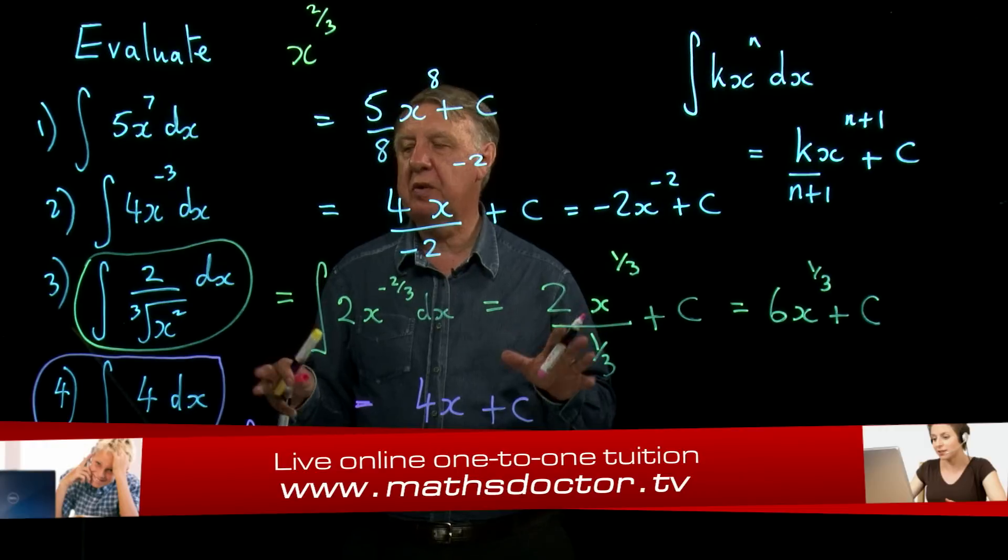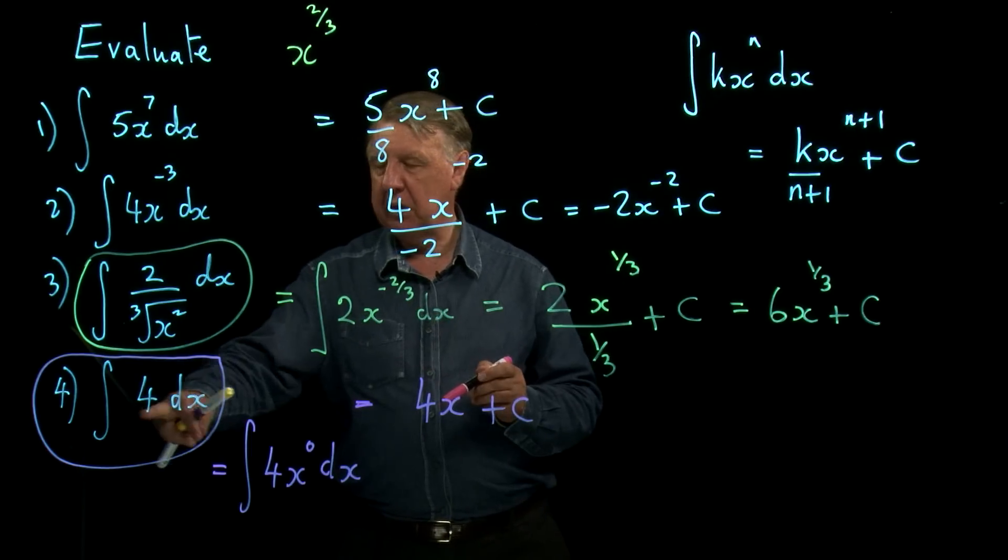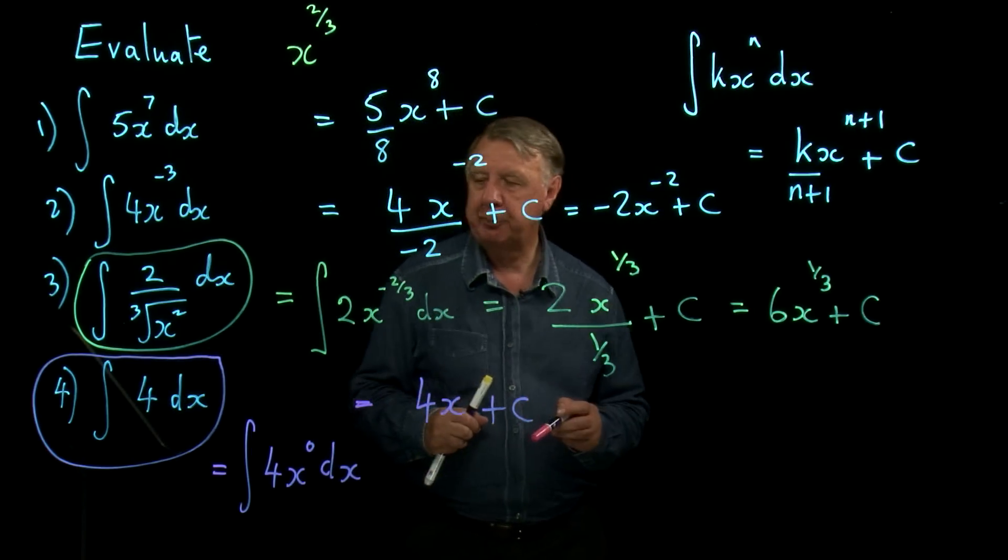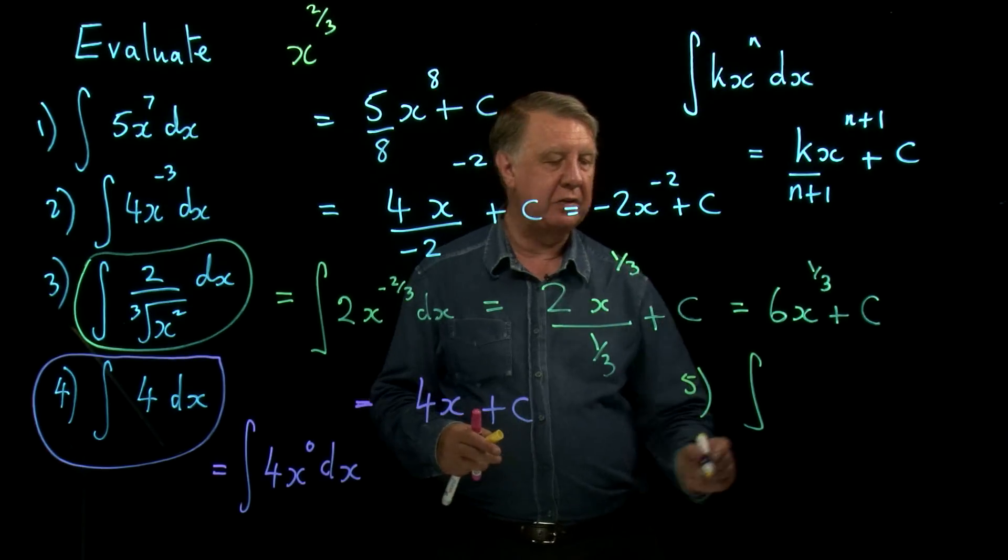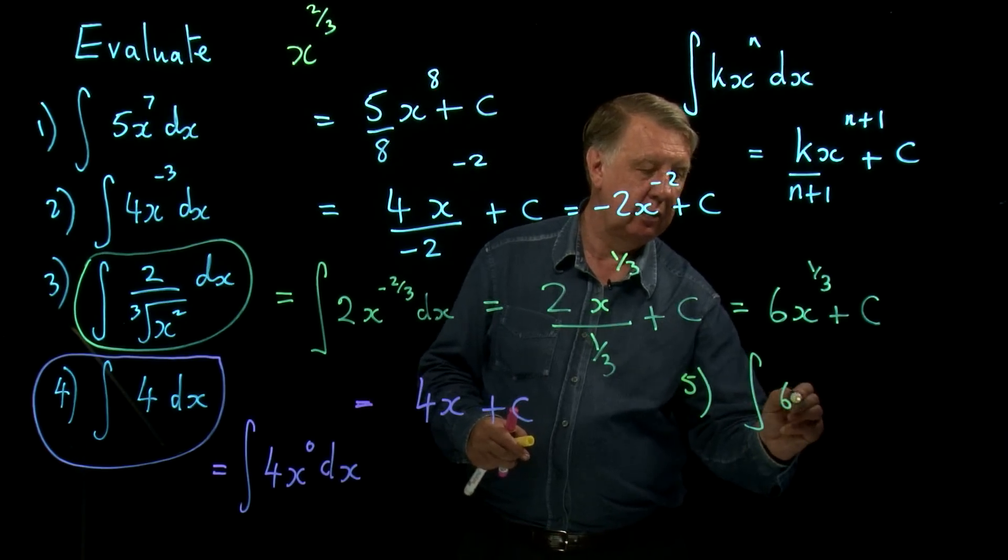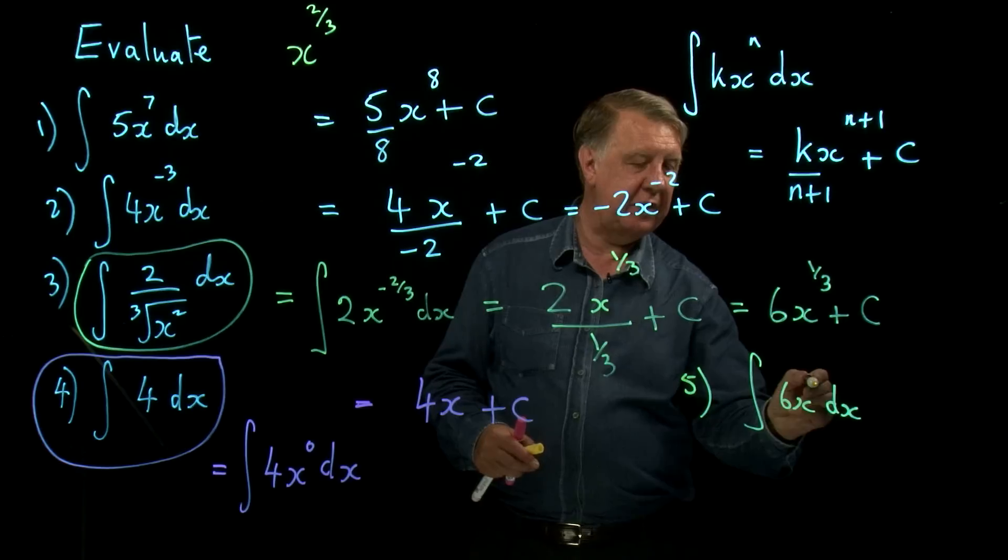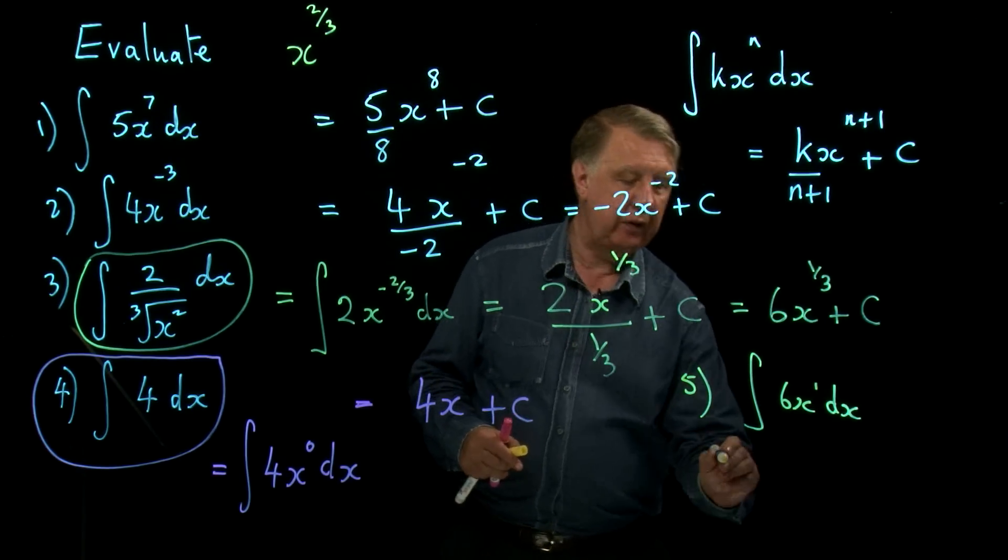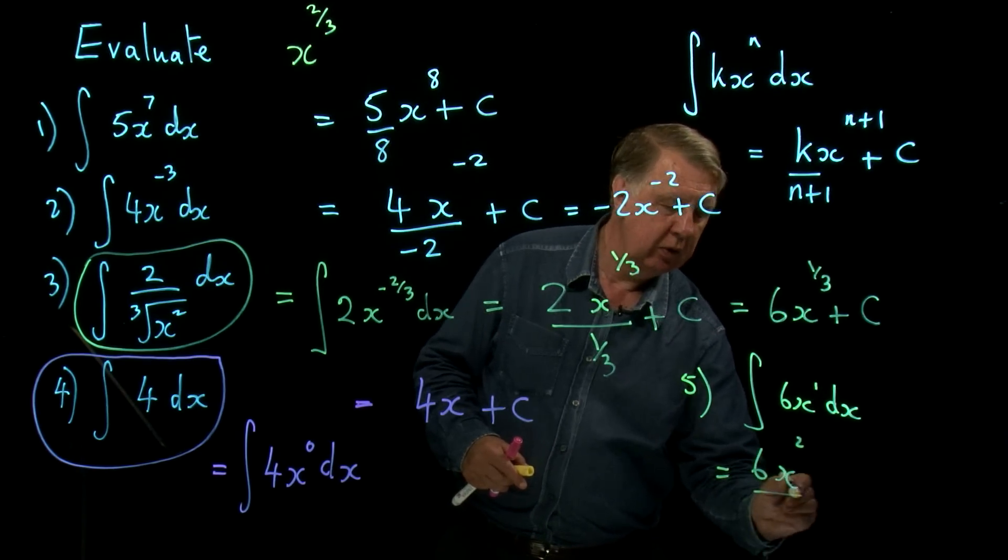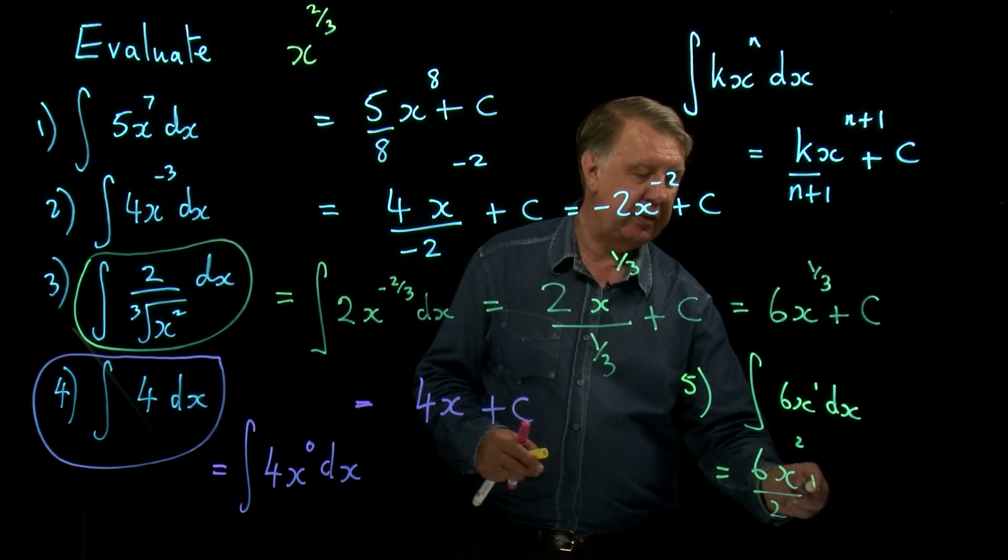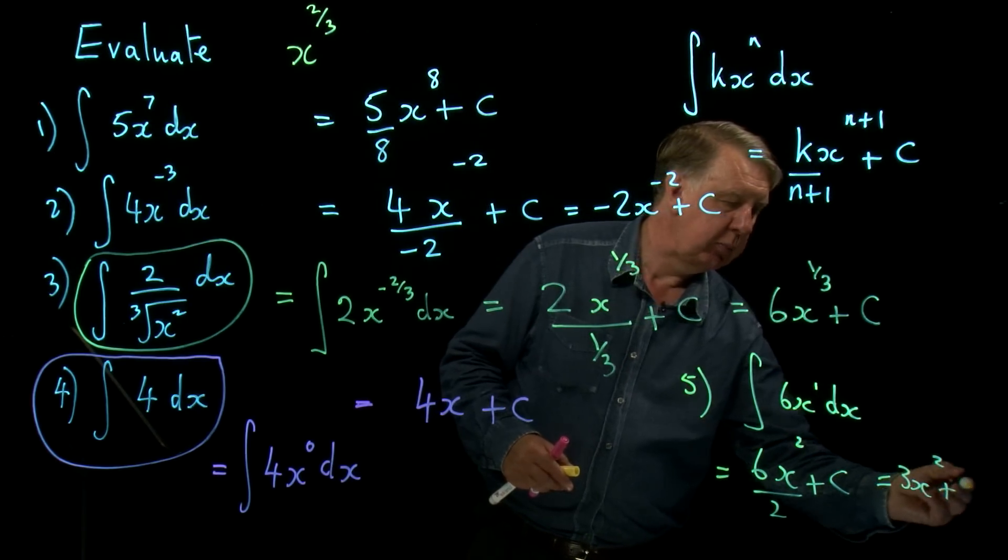So there you have examples of the basic use of this formula. Perhaps we ought to just slip in one more while we're looking at that. I think that if we have, let's do a number 5, we want to integrate a multiple of x, then in order to use the rule we have to remember that that's x to the 1. So therefore if I integrate this, add 1 to the power is x to the 2, divided by the new power plus c and 6 over 2 is 3 so that would be 3x squared plus c.